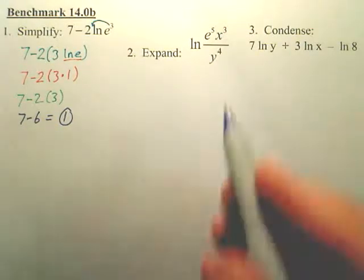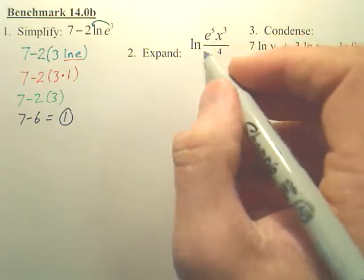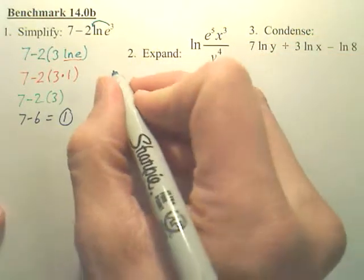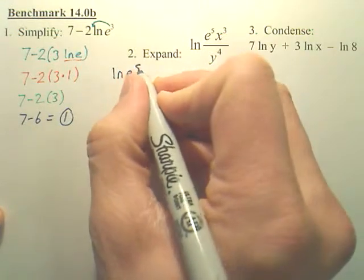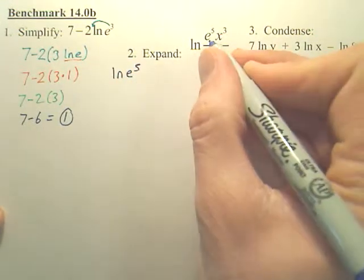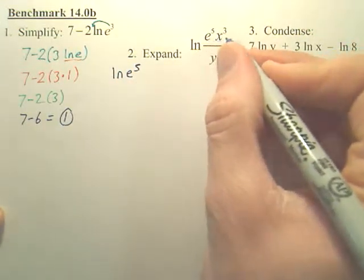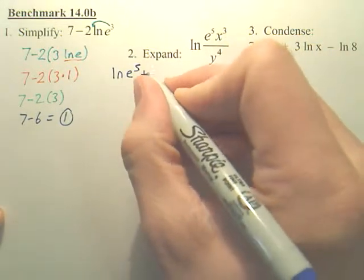Now, for number 2, if we're going to expand this, the first step in expanding this is to rewrite each piece with its own ln. Now, these two are multiplied together, so it's a plus when you expand.